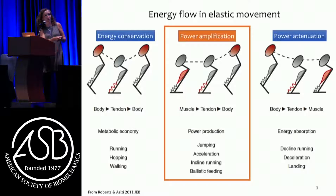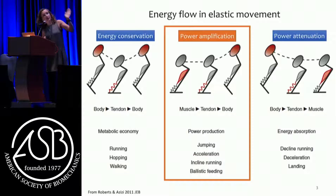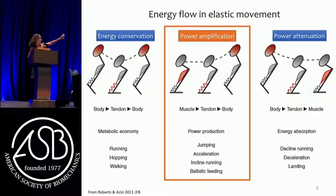On the left-hand side we can think about energy conservation. The red color on the screen is energy moving from the body to the spring and back to the body - we think about that in terms of metabolic economy, running, hopping, walking, cyclical, highly efficient motion. On the very right-hand side we can think about power attenuation, where energy moves from the body to the spring and to the muscle to dissipate energy in situations where there's landing or high forces.